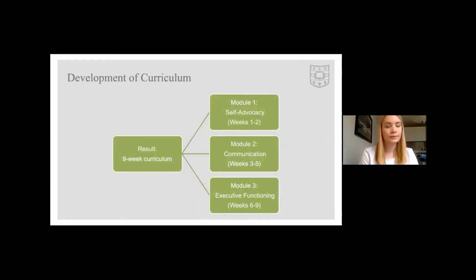For the development of the curriculum, we had to consider multiple questions: which topics are within OT's scope of practice, which topics address the needs of the students, and which materials are already available. Through literature searches and consultations with content experts and key stakeholders, we developed a nine-week curriculum divided into three modules. Weeks one through two would be module one — self-advocacy. Weeks three through five would be module two, and weeks six through nine covered executive functioning.